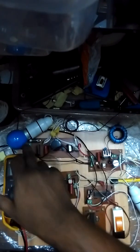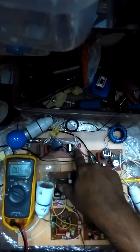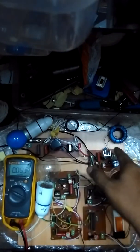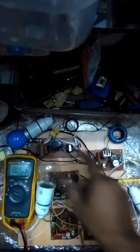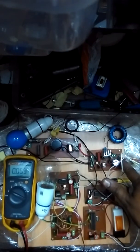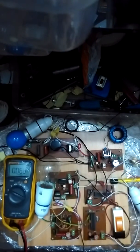This is a bridge rectifier which converts 230 volt AC to approximately 320 volt DC. Then there is a buck converter. The buck converter converts this DC to about 150 or 160 volt DC.